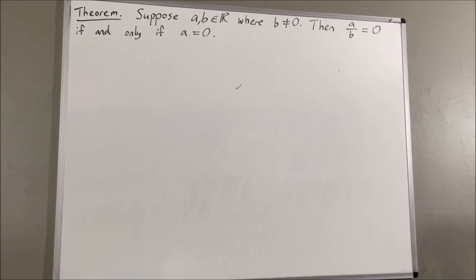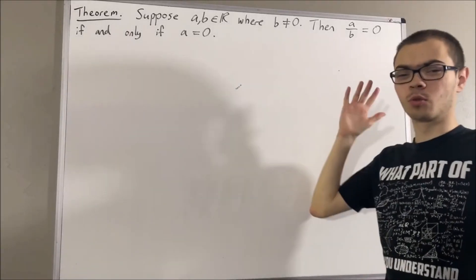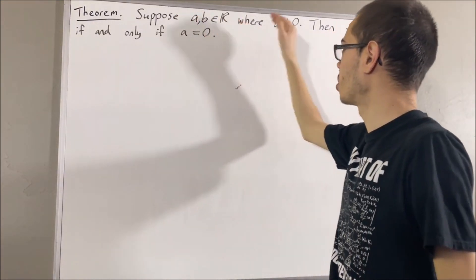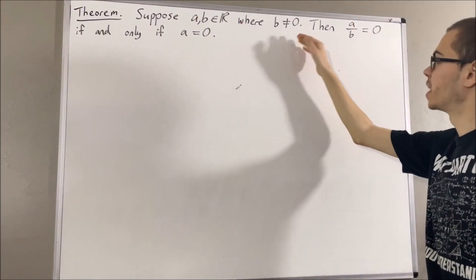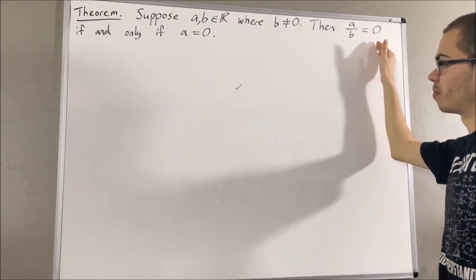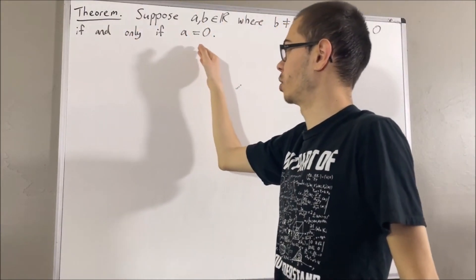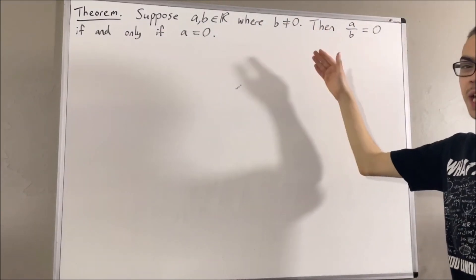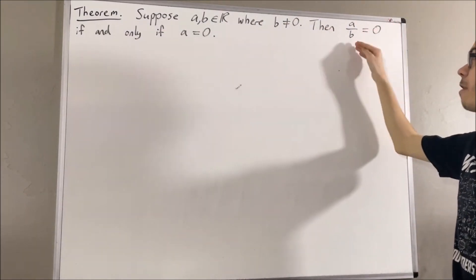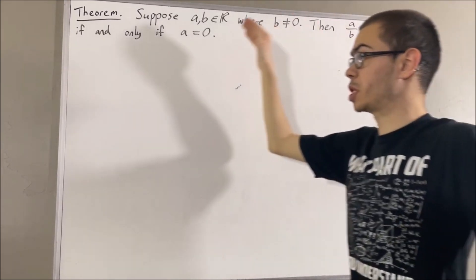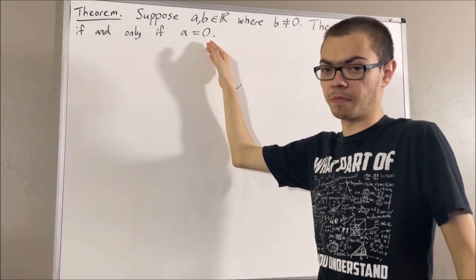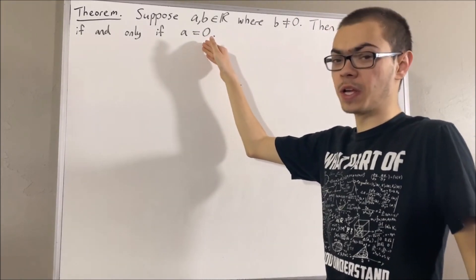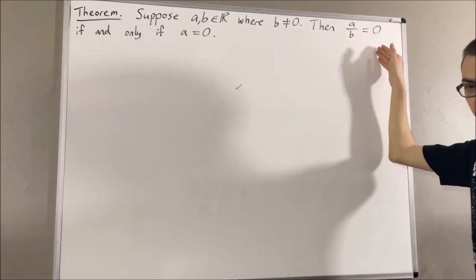Hello! In this video, we are going through the following theorem. Suppose a and b are real numbers, where b is not equal to 0. Then a over b is equal to 0, if and only if a is equal to 0. What this is essentially saying is, if we are given that the fraction is equal to 0, then we can be sure that the numerator is equal to 0. On the other hand, if we are given that the numerator is equal to 0, then we can be sure that the fraction is equal to 0.